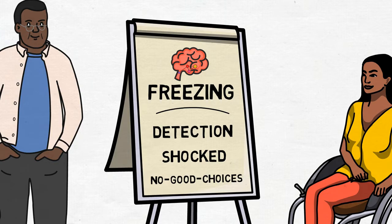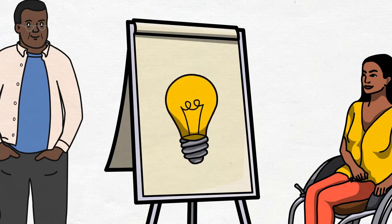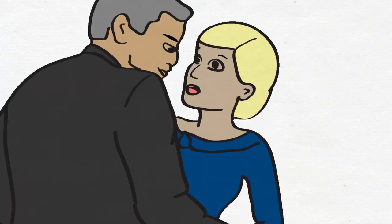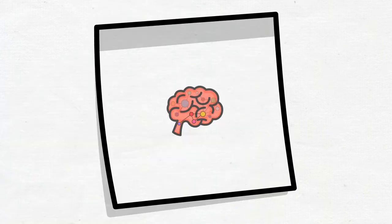If we understand those three types, then we'll better understand why and how people often don't resist or escape at the beginning of sexual assaults. But first, some background.